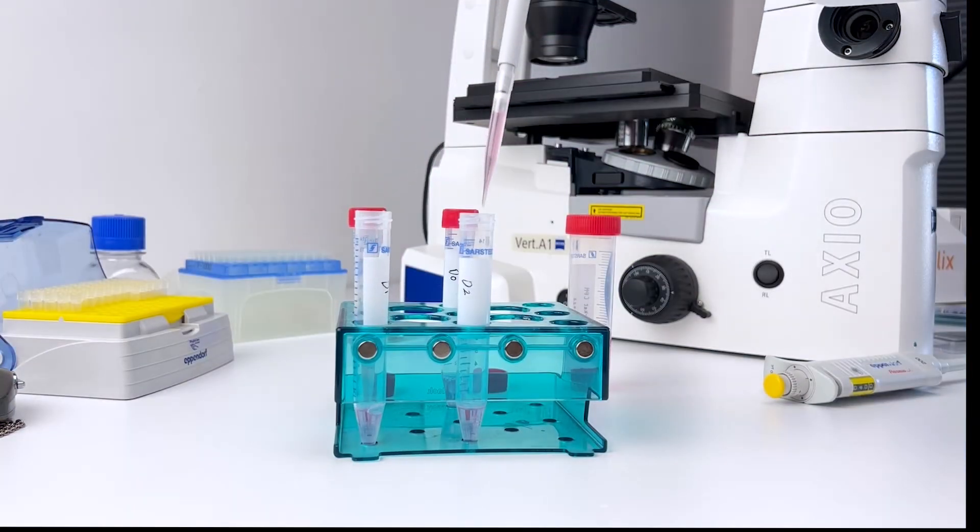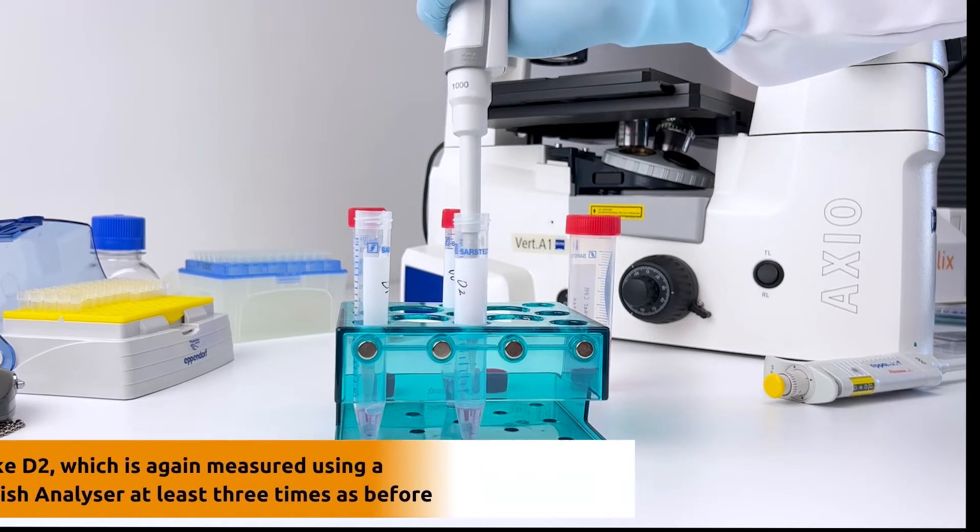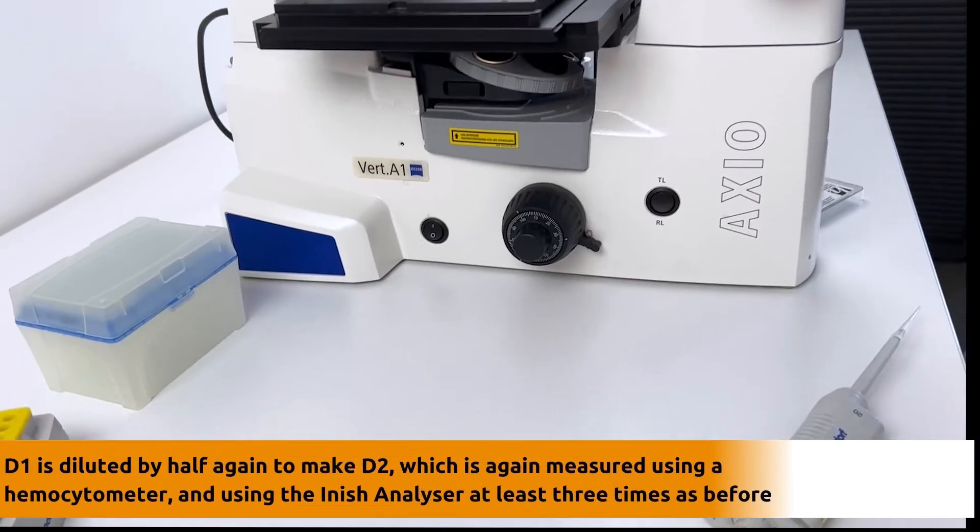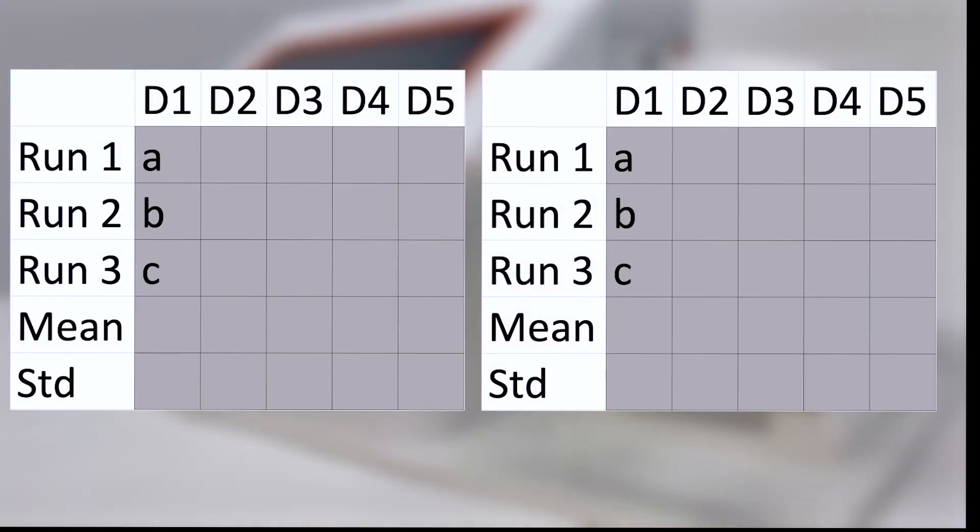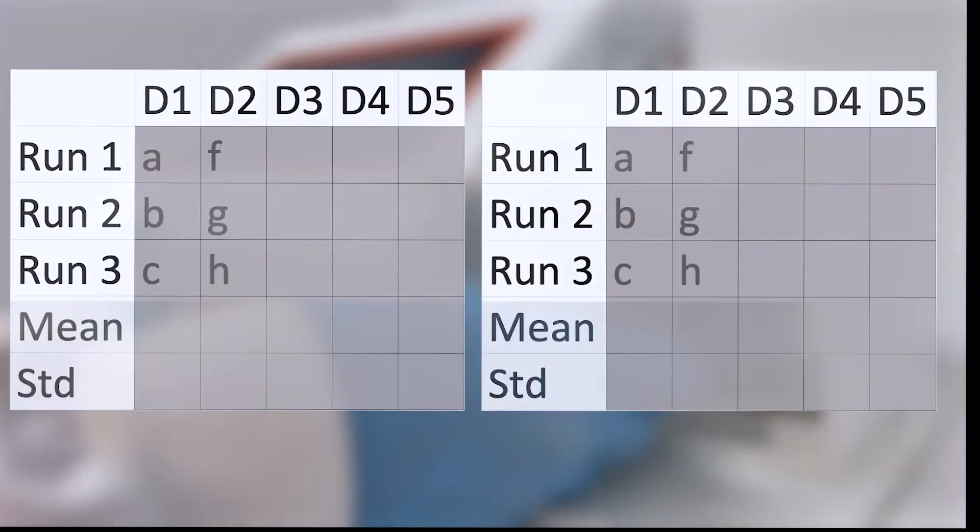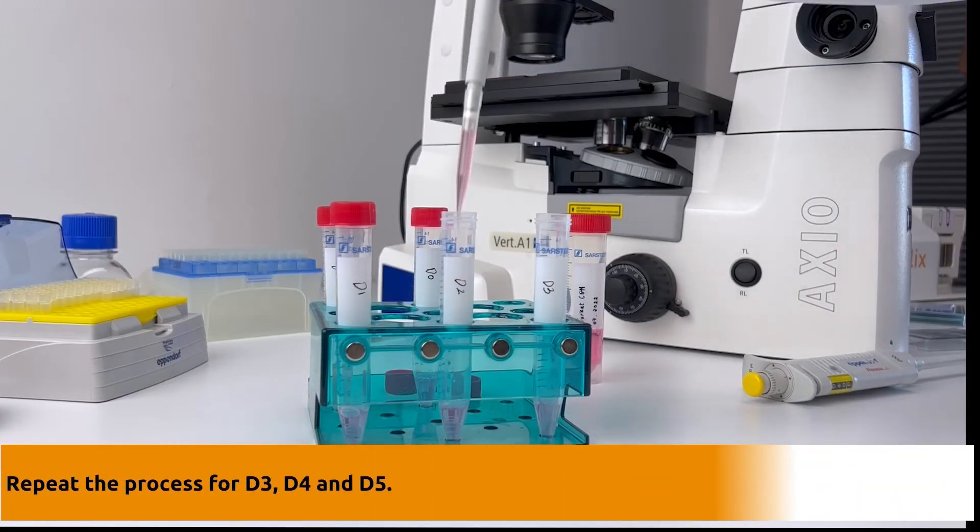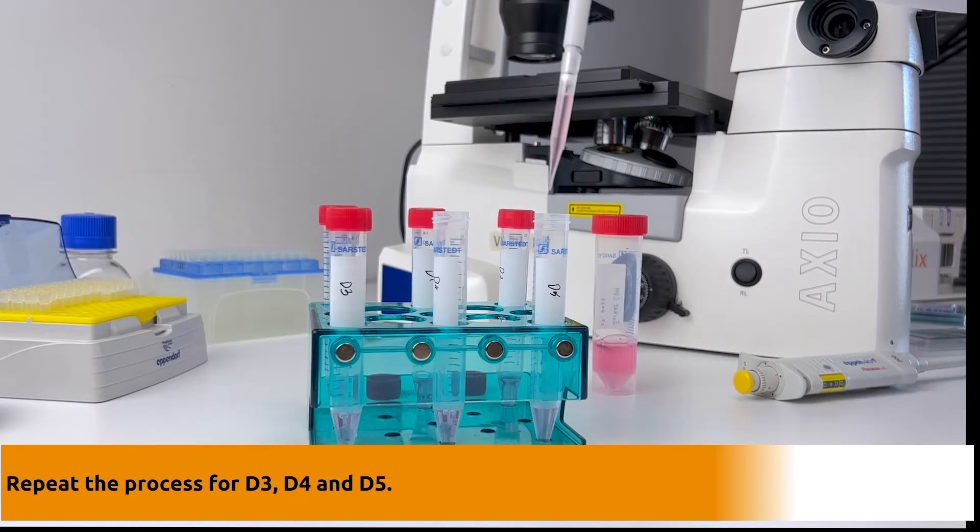After taking your measurements, D1 is diluted by half again to make D2, which is again measured using a hemocytometer and using the Inish analyzer, at least three times as before. This whole process is repeated for D3, D4 and D5.